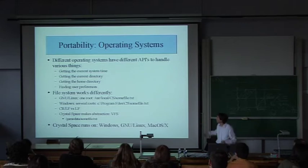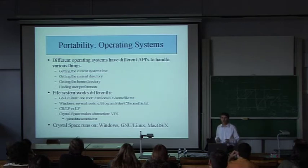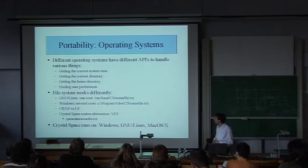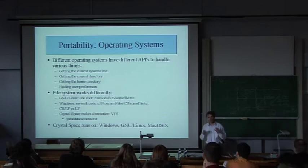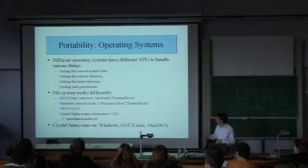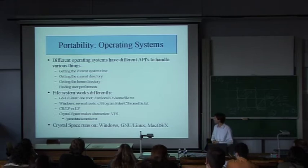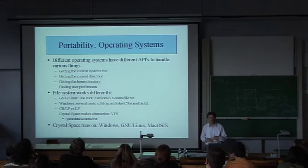The obvious OS portability problems include the current directory, home directory, finding user preferences — all these are different on different operating systems. The file system works differently too, and there's the problem with line endings in text files, which differ between Windows, Linux, and Macintosh. Crystal Space solves that by adding an abstraction layer — a virtual file system. In a Crystal Space application, you just use a predefined path like 'game data/some file', and the layer maps it to the right OS-specific path. The virtual file system also supports reading directly from zip archives.